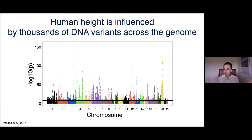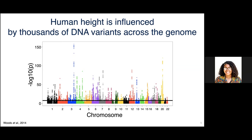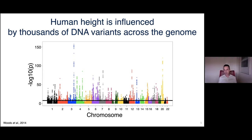Every chromosome, and indeed almost every one-megabase region of the human genome, contains some variation that influences how tall we are, each with relatively small effects.